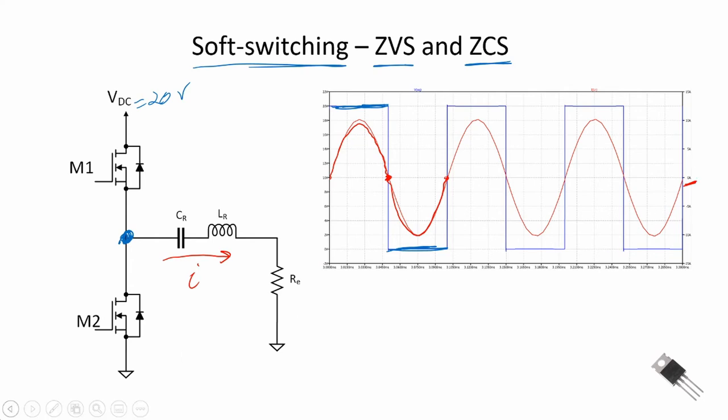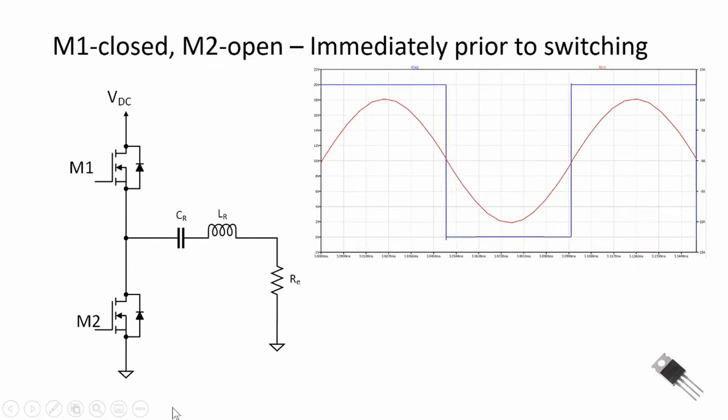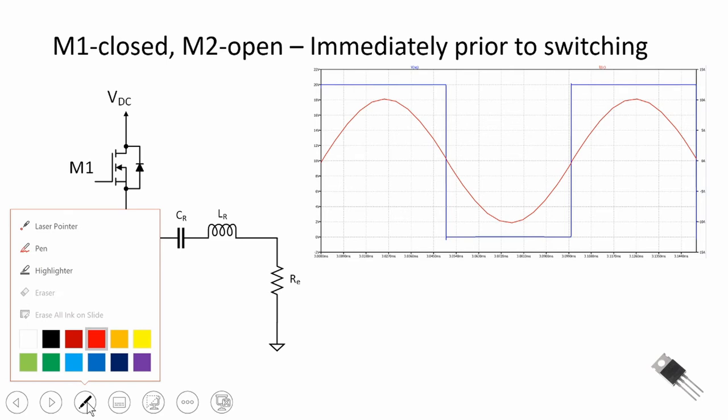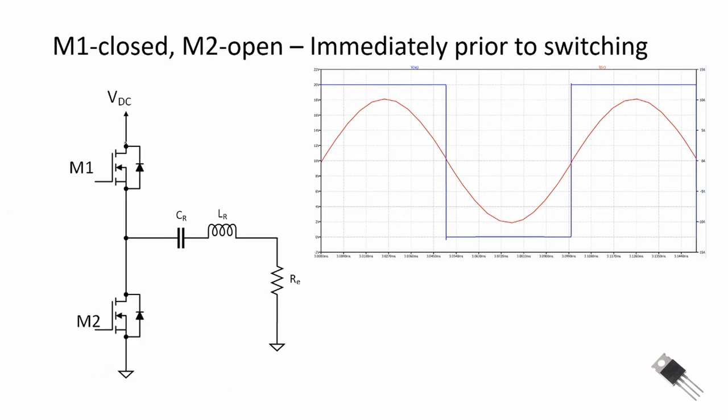Let's look at this in more detail. Let's specifically look at the case where M1 is closed and M2 is open. And here we would have this switch is closed, M1 is closed, and M2 is open. Right before the switching moment, right at this point, we want to break before make, and I've talked about this before, where we're going to break M1 before making M2.